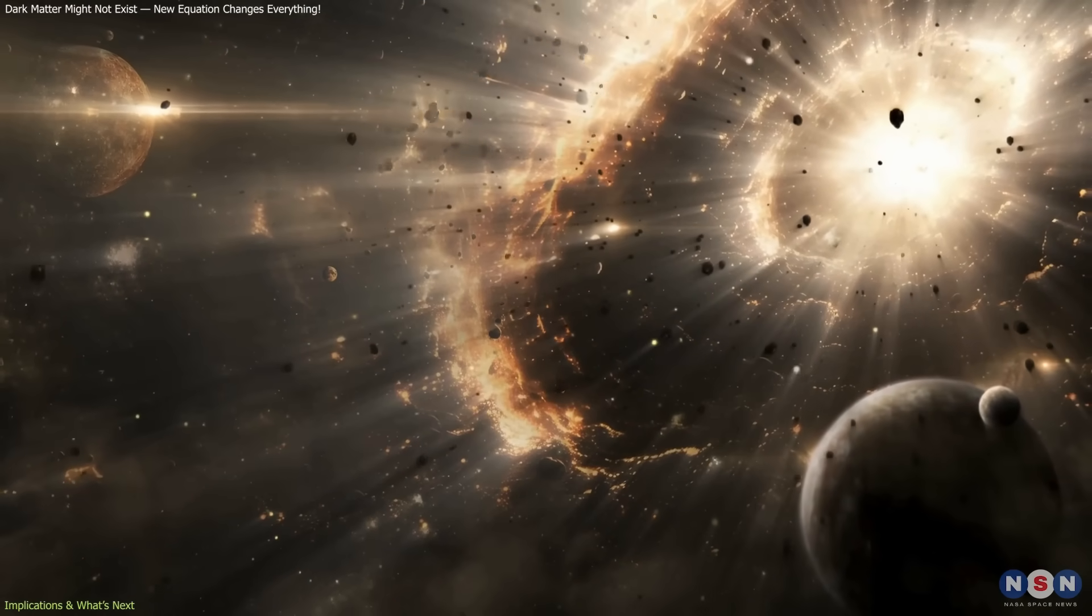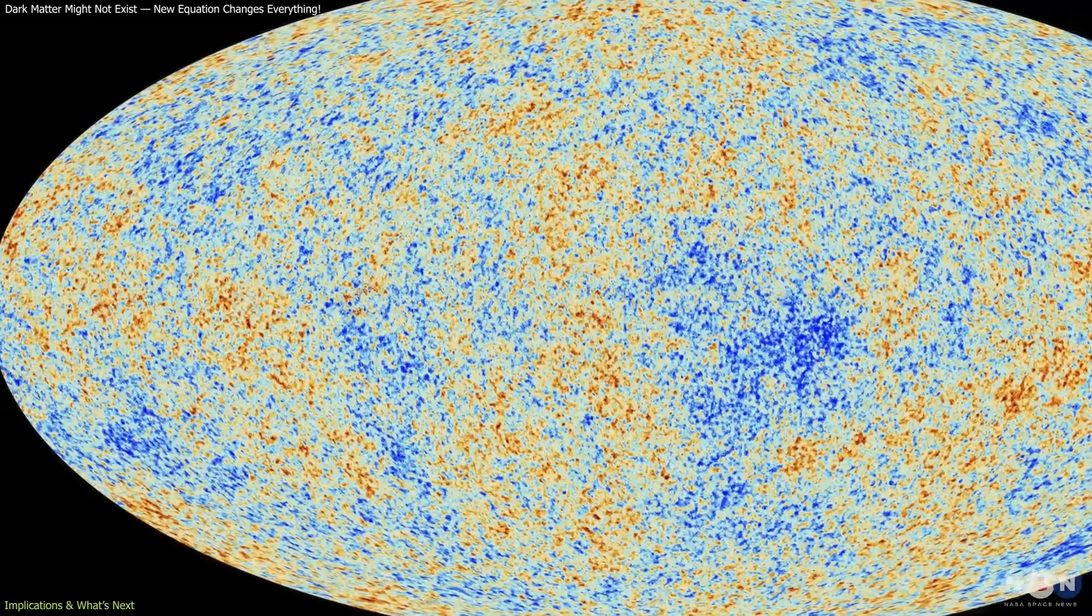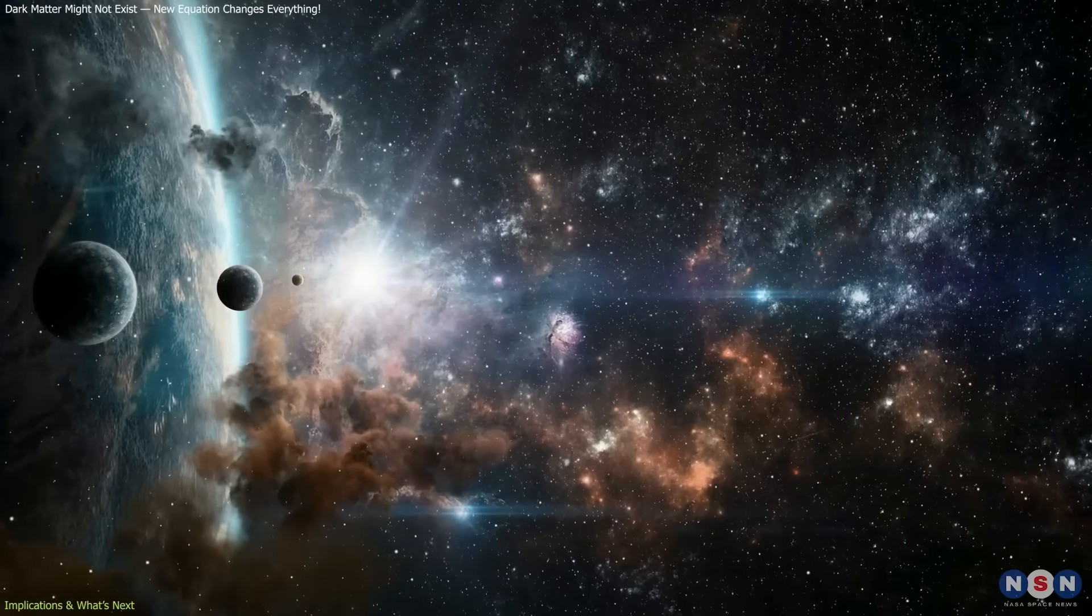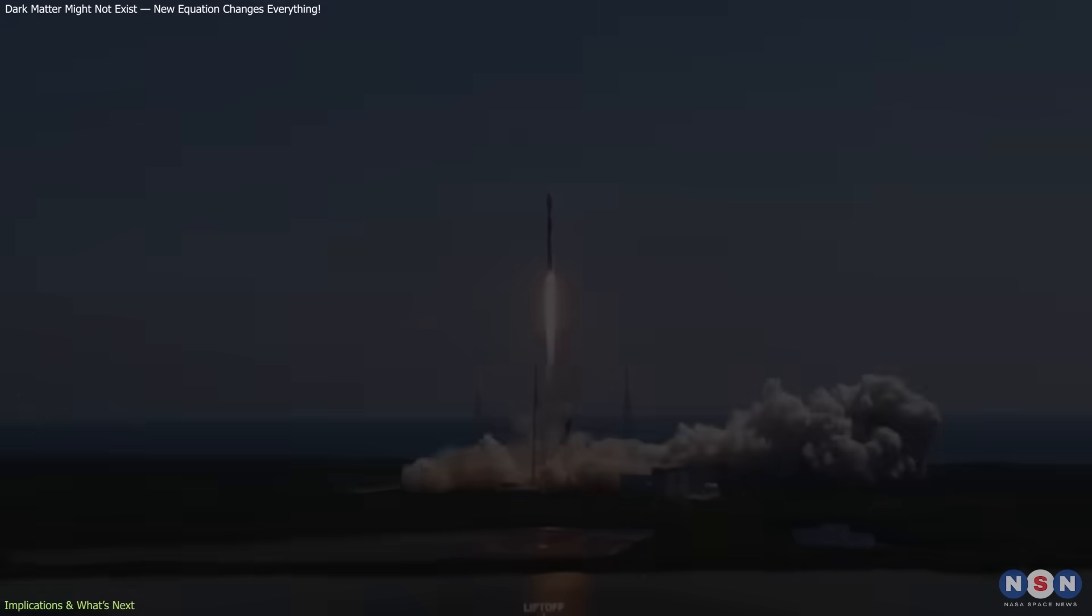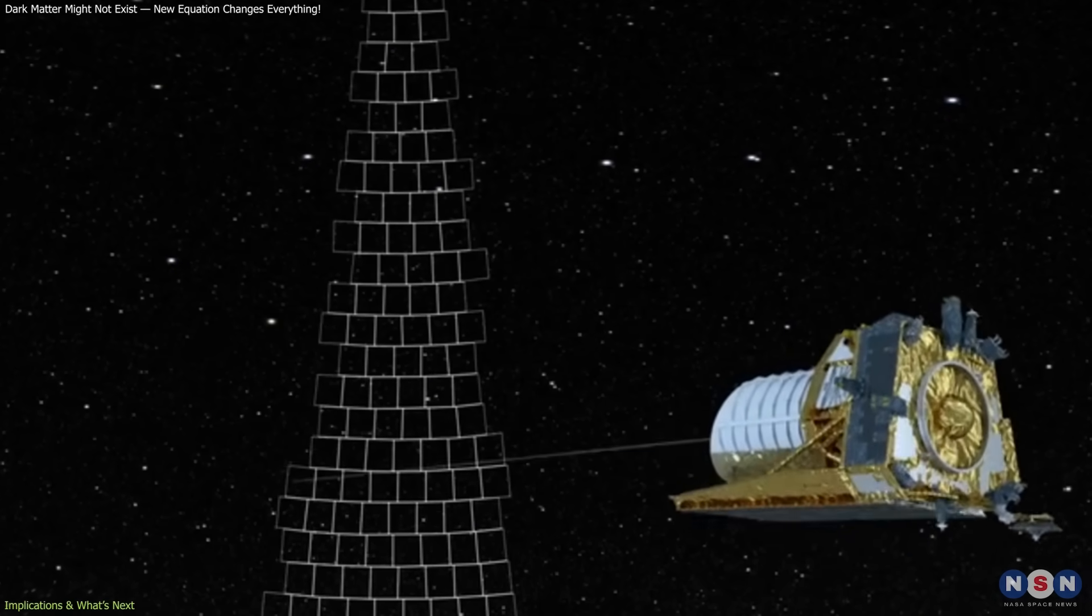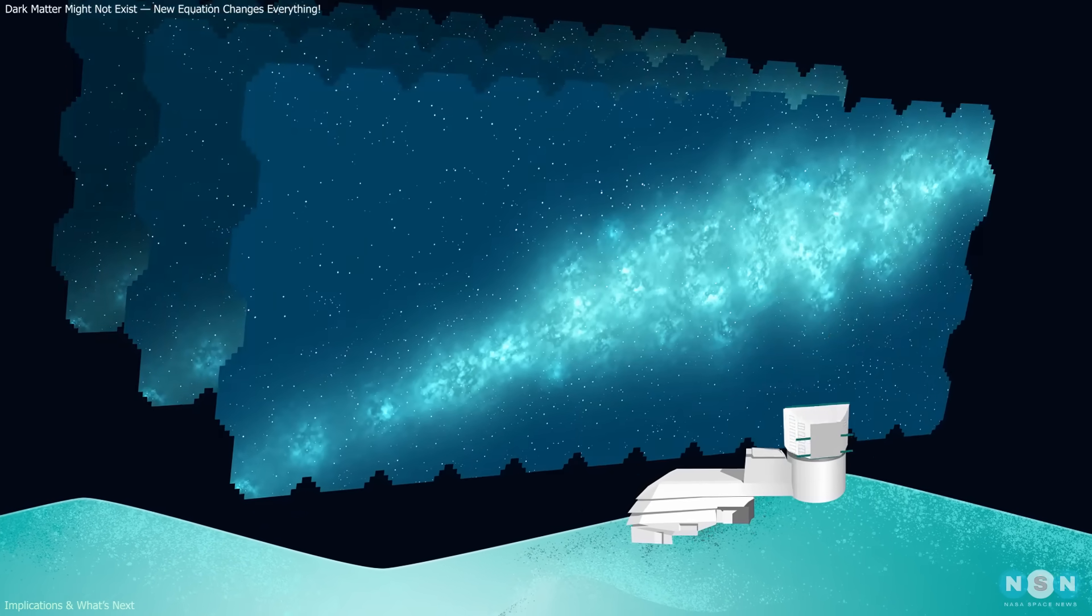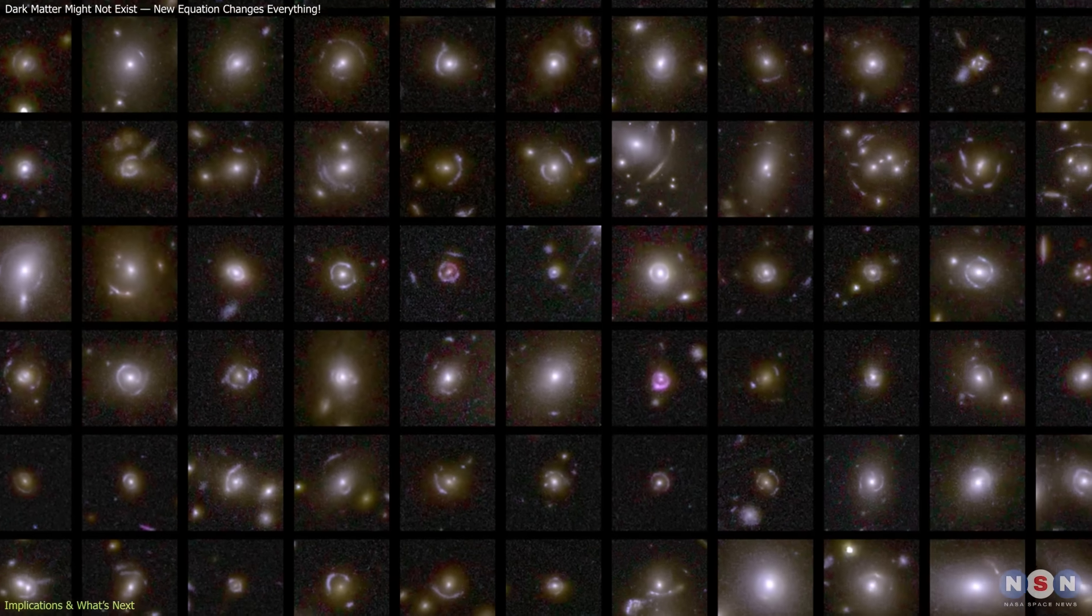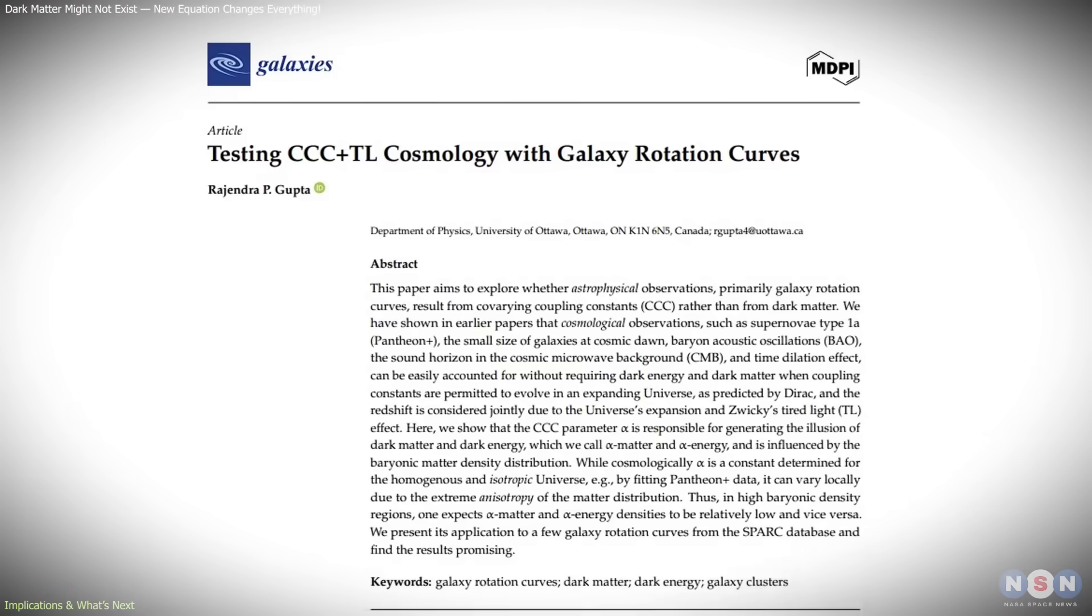But the bar for evidence is high. The model must be tested against observations across all scales, from the motions of nearby galaxies to the distribution of cosmic microwave background radiation. It must not only reproduce known results, but also make new, falsifiable predictions. Upcoming observatories may help settle the debate. The Euclid Space Telescope, launched by the European Space Agency, is mapping billions of galaxies to measure how cosmic structures evolve. The Vera Rubin Observatory, soon to be fully operational, will deliver detailed motion data for countless galaxies and clusters. These datasets could reveal whether subtle variations in the constants of nature exist, or if dark matter and dark energy remain the more accurate explanations.